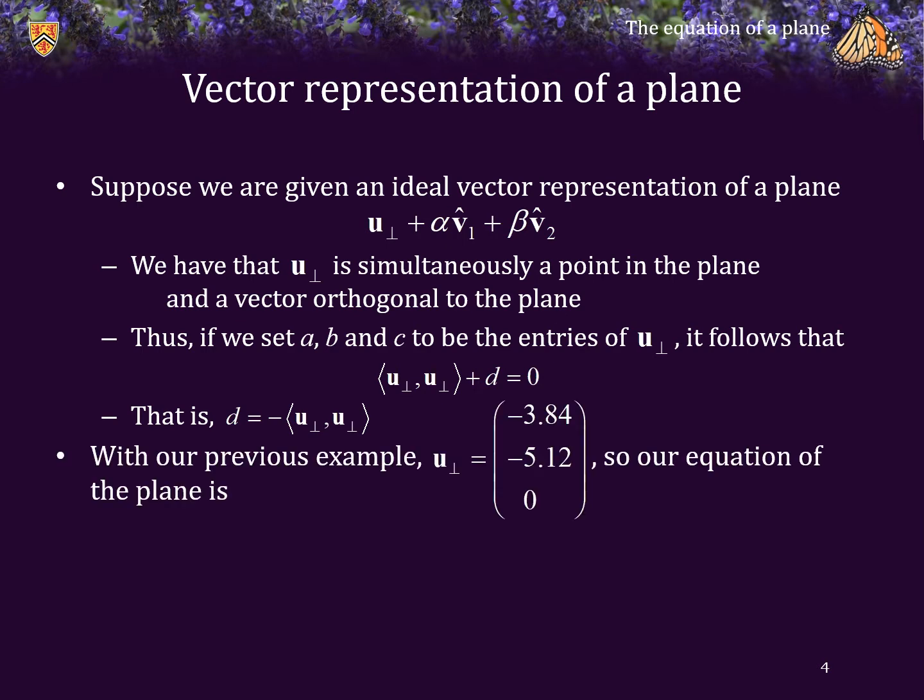So, for example, with our previous example where U perp was negative 3.84, negative 5.12, and 0, consequently, our equation of the plane must be negative 3.84X minus 5.12 times Y plus 0 times Z minus the 2 norm of this vector, which is 40.96, and that's equal to 0.